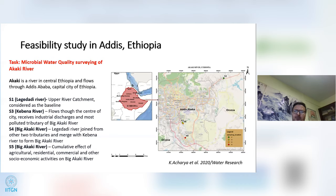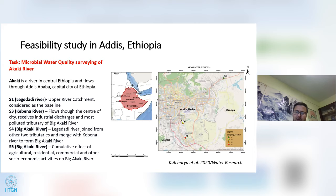We took our portable lab — everything packed in a suitcase — to Ethiopia. Our task was to survey the microbial water quality of the Akaki River, which flows through Addis Ababa, the capital of Ethiopia. We monitored four different sites with different land use patterns. Site S1, the most upstream, is used by people for bathing, washing clothes, and irrigation. Site S3, in the Kebena River flowing through central Addis Ababa, receives industrial discharge and is a heavily polluted tributary.